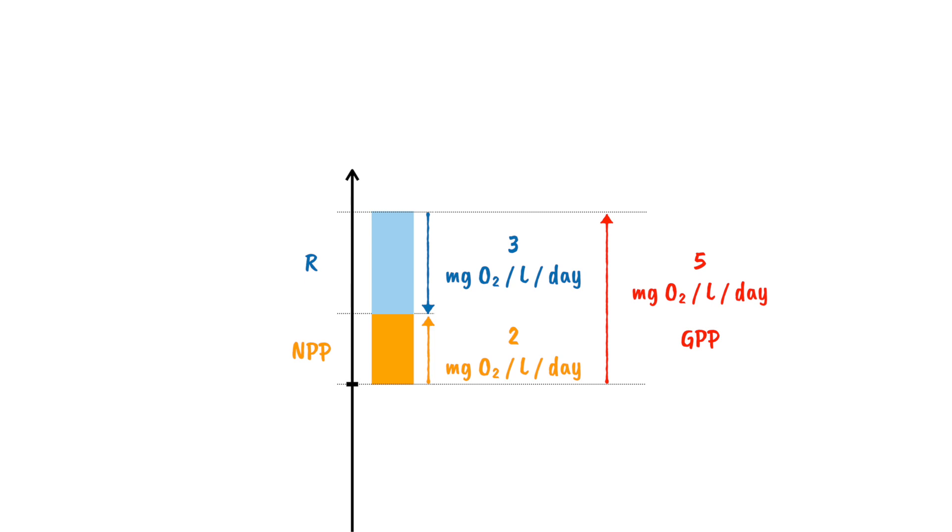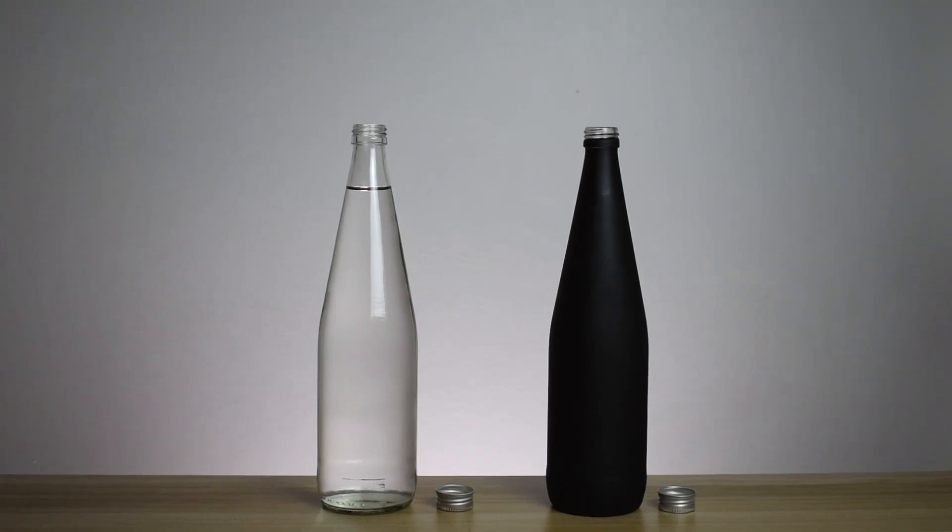Let me walk you through doing this for real and pull the ideas together. Take two samples of water from your sample site. One bottle should be transparent. The other should be covered. Mine here has been spray-painted black, but covering it with something opaque will also work.